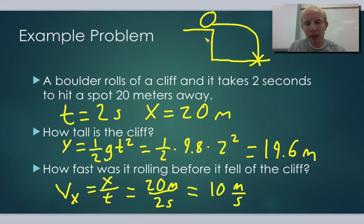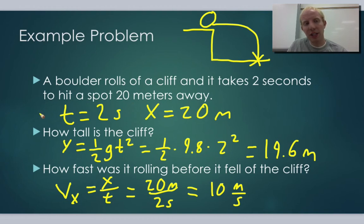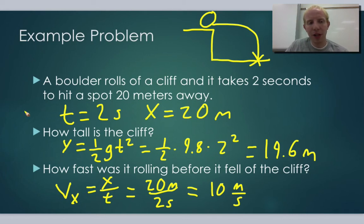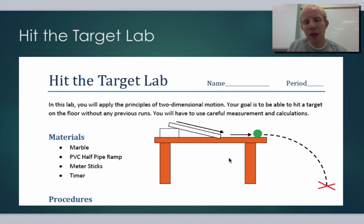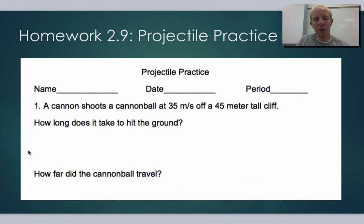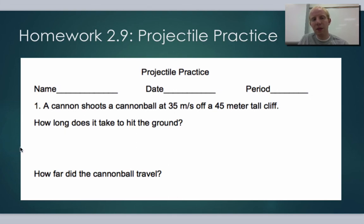That's all we're doing for this homework — practicing using the projectile equations, treating the x direction and the y direction separately, and learning how to figure out what information you're given. When you do these problems, determine if the given information is for the y direction or the x direction. In class, we did the Hit the Target Lab, where you knew the speed of a marble and the height of a table and had to place the target at the right spot. If you missed the lab, go to the class website for the makeup. We also have a homework assignment called Projectile Practice. Let me know if you have any questions, and thank you for watching.